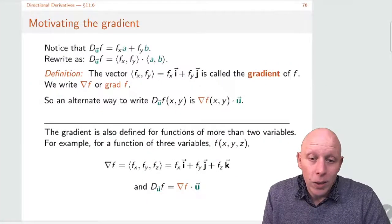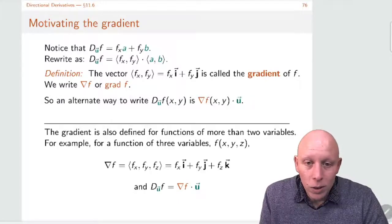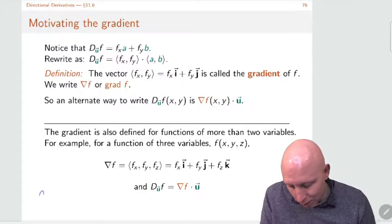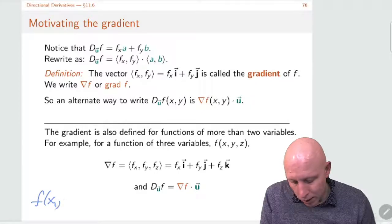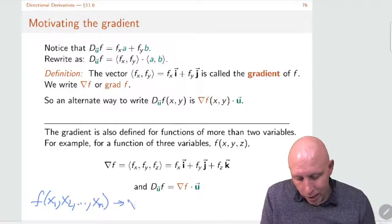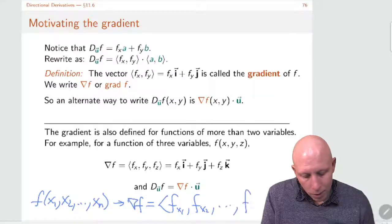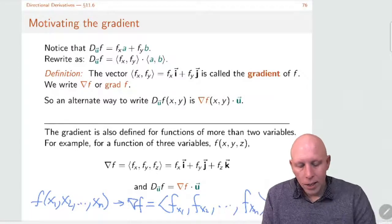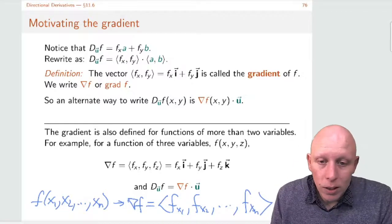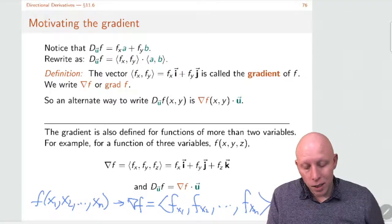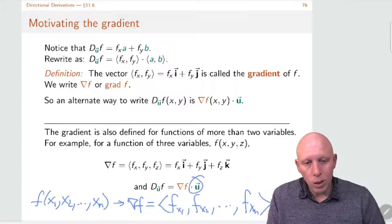Just like we can do this with two variables, we can do this with three variables or even more. If you have a function f of x1, x2, ..., xn, then the gradient of f is equal to the vector (f sub x1, f sub x2, ..., f sub xn). The directional derivative is what happens when you dot it with the unit direction in which you're going.